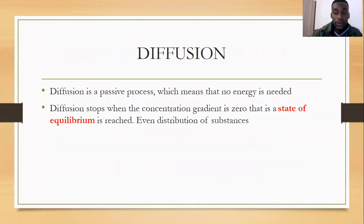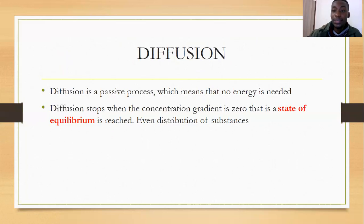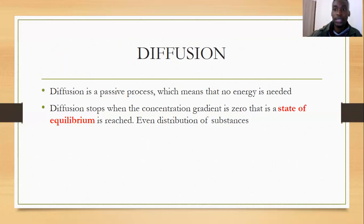Diffusion is a passive process — no energy is utilized. Movement is simply down a concentration gradient from high to low concentration. The net movement of particles will come to an end when equilibrium is reached, meaning diffusion stops when the concentration gradient is zero — when there are equal concentrations of particles across the membrane.